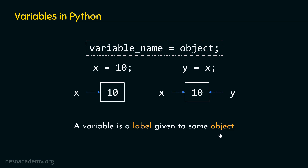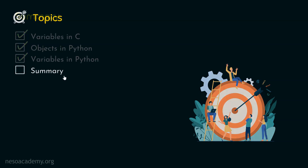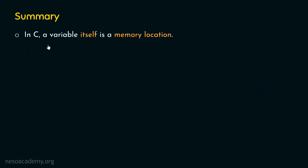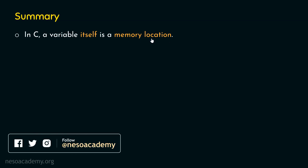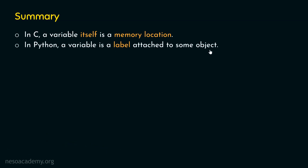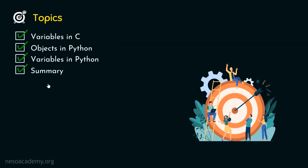Now we know what a variable in Python is. In summary: in C, a variable itself is a memory location — it has meaning, it has type. In Python, a variable is just a label attached to some object. Now you know why there is no type given to a variable in Python, and why there is no need to declare a variable before using it — because variable is just a label. Real information is inside the object. Memory is allocated for an object in Python, and a variable is just a name given to that object. We have understood variables in C, objects in Python, variables in Python, and the summary of this presentation.